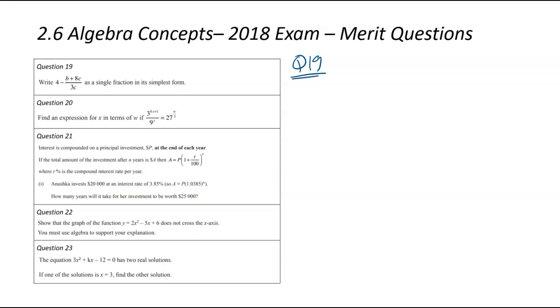Write this algebraic expression as a single fraction in simplified form. Let's start by jotting down the fraction as it is. So the first thing I've noted, 4 is not really a fraction. So I'm going to change it to 4 over 1 minus (b+8) all over 3c.